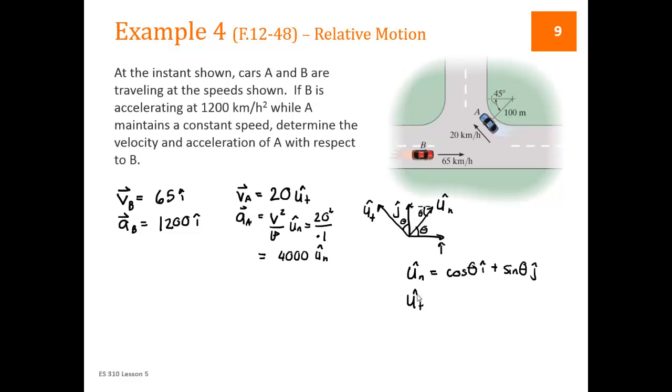UT is going to equal, the I hat is going to be negative, and it's opposite the theta. So it's sine of theta I hat. And the J hat is positive, and it's adjacent to the theta. So plus cosine theta J hat.